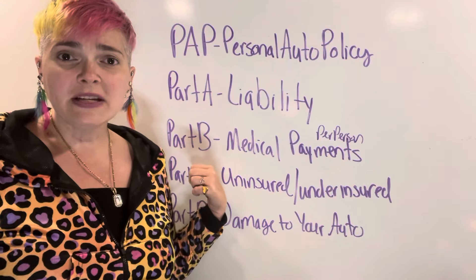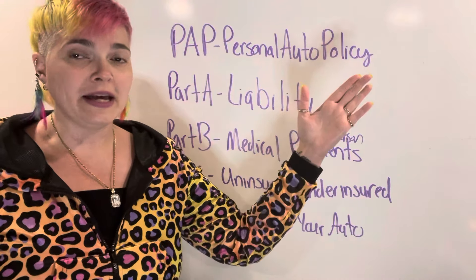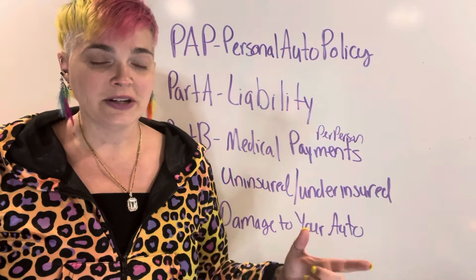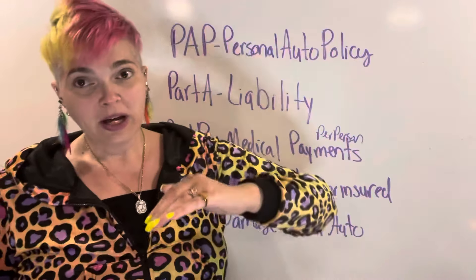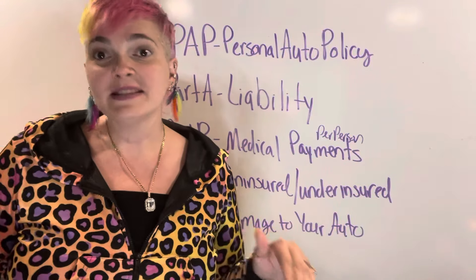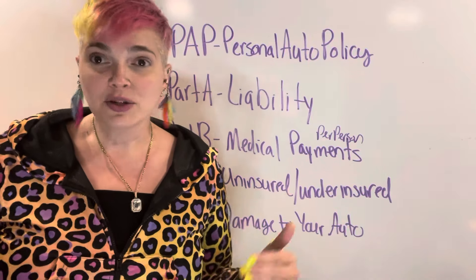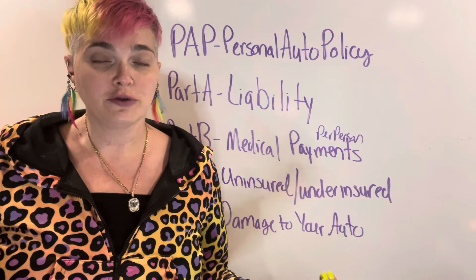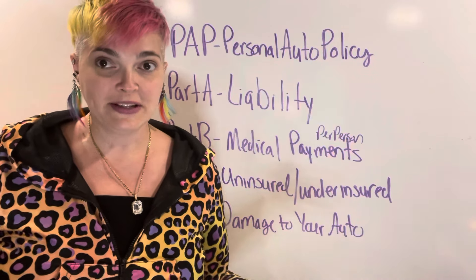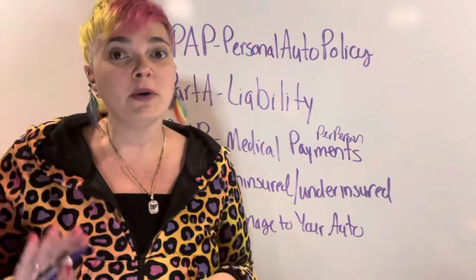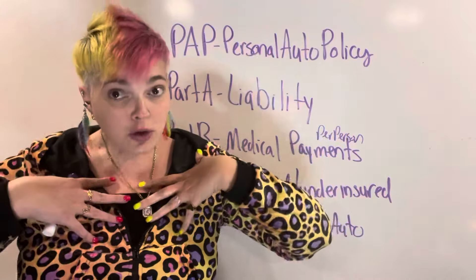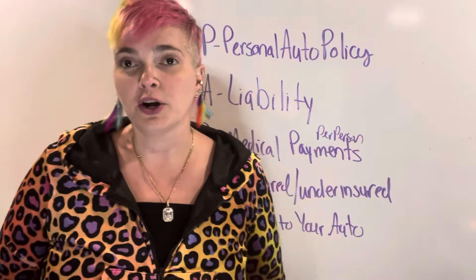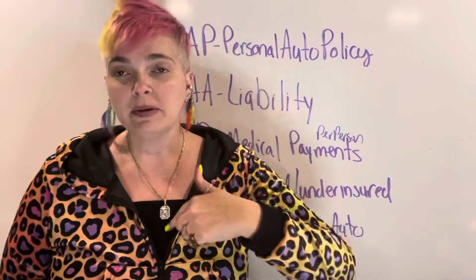If you're taking the exam with auto on it, you're probably also taking it with homeowners. Part F on homeowners is medical payments but it's for other people, whereas on auto it's for you. Other than that, medical payments between home and auto function exactly the same way — it's for an actual medical injury, not pain and suffering, you need a medical bill, you may have to submit to physical exams as often as the insurer requests, it's good for up to three years, and it is per person. The biggest difference is that auto med pay is for you and the people in your car, while homeowners med pay is for guests, friends, and visitors.